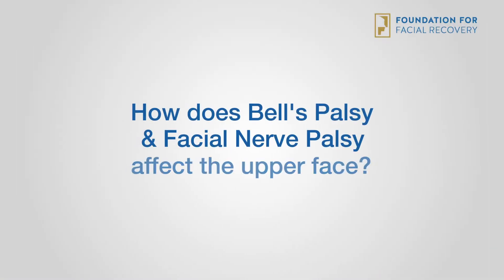How does Bell's palsy and facial nerve palsy affect the upper face? With Bell's or another severe nerve palsy, the brow often falls. The descent of the brow is referred to as brow ptosis. When the brow falls, the eyelid skin can appear redundant and interfere with the field of vision. In addition, the brow and forehead can often feel heavy if the function of the forehead muscle does not recover. In these cases, surgical repair may be an option.